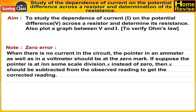Note on zero error: when there is no current in the circuit, the pointer in an ammeter as well as in a voltmeter should be at the zero mark. If the pointer is at some scale division X instead of zero, that value should be subtracted from the observed readings to get the corrected reading.